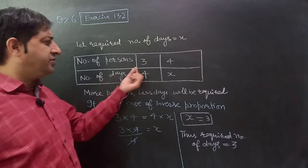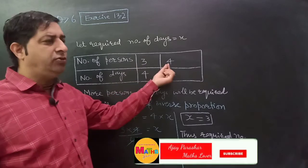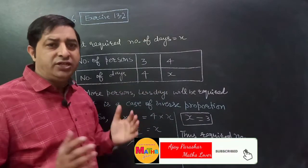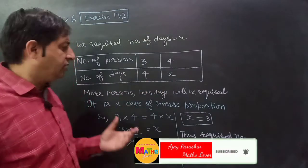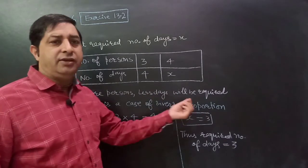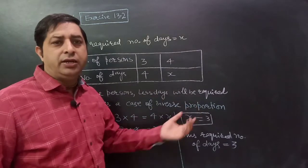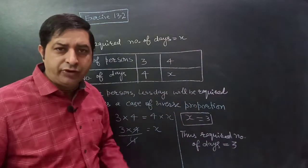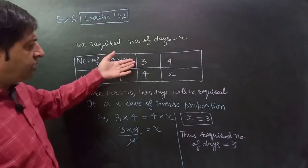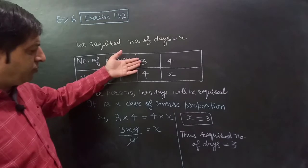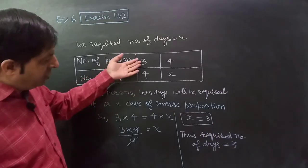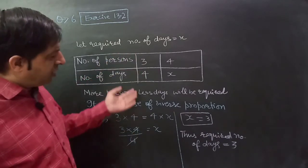More persons means they will finish their work quickly. So more persons, less days will be required. It is a case of inverse proportion. If it is a case of inverse proportion, we have to make their product equal.